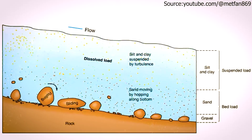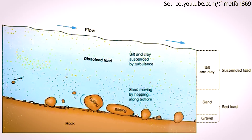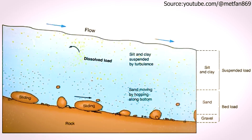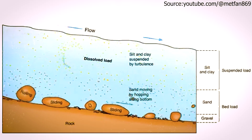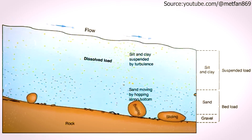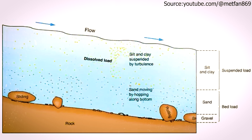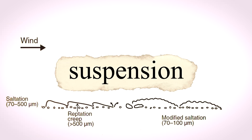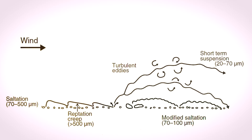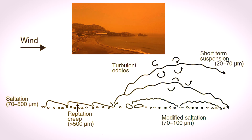Then, the particles start moving in two main ways, in a process called saltation. Larger grains of sand bounce or hop along the surface, knocking into other grains and sending even more sand into the air. In suspension, very small particles of dust get lifted higher and stay floating in the air for longer distances. These are the particles that make the sky look hazy or orange during a storm.